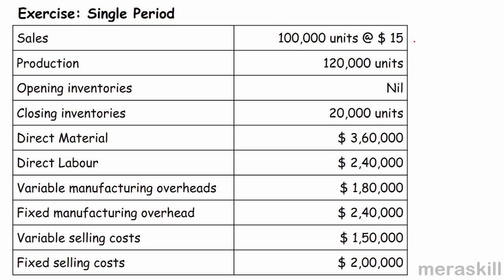Straight away you know there is going to be closing stock of 20,000 units. Opening inventories are nil. Closing inventories 20,000 given here — it need not be given, this information is redundant. You must understand that there are closing inventories. Direct material, direct labor, variable manufacturing overheads, fixed manufacturing overhead, variable selling costs, fixed selling costs. The question asks you to find the cost of goods sold and prepare the income statement under absorption costing and under variable costing.